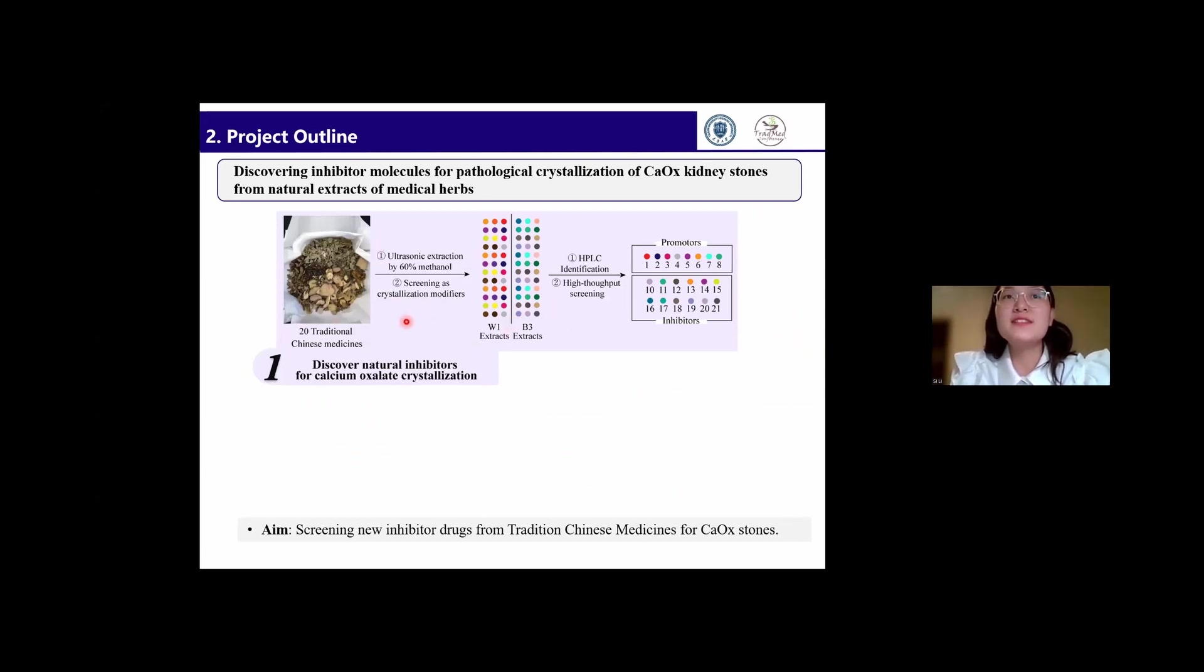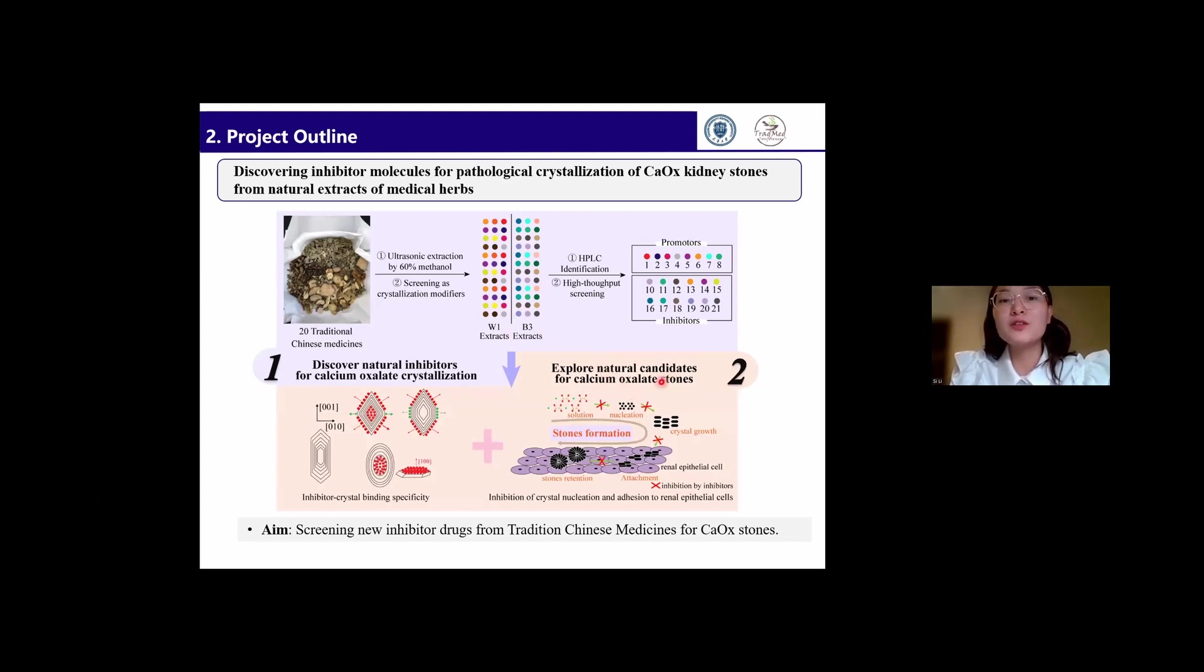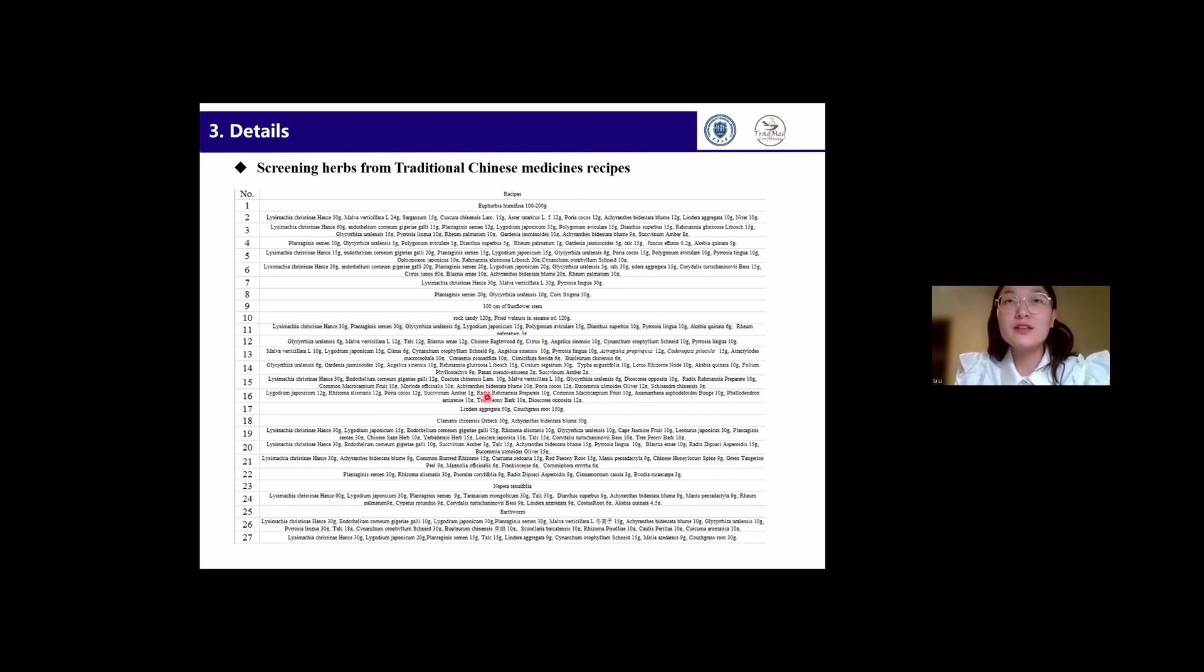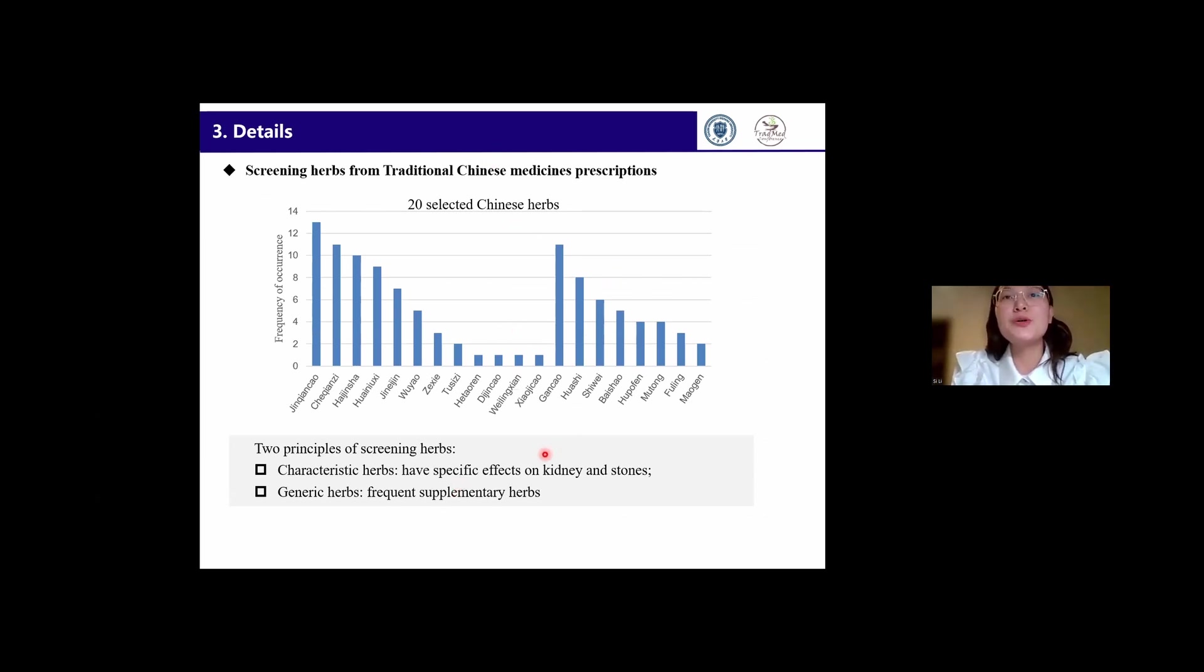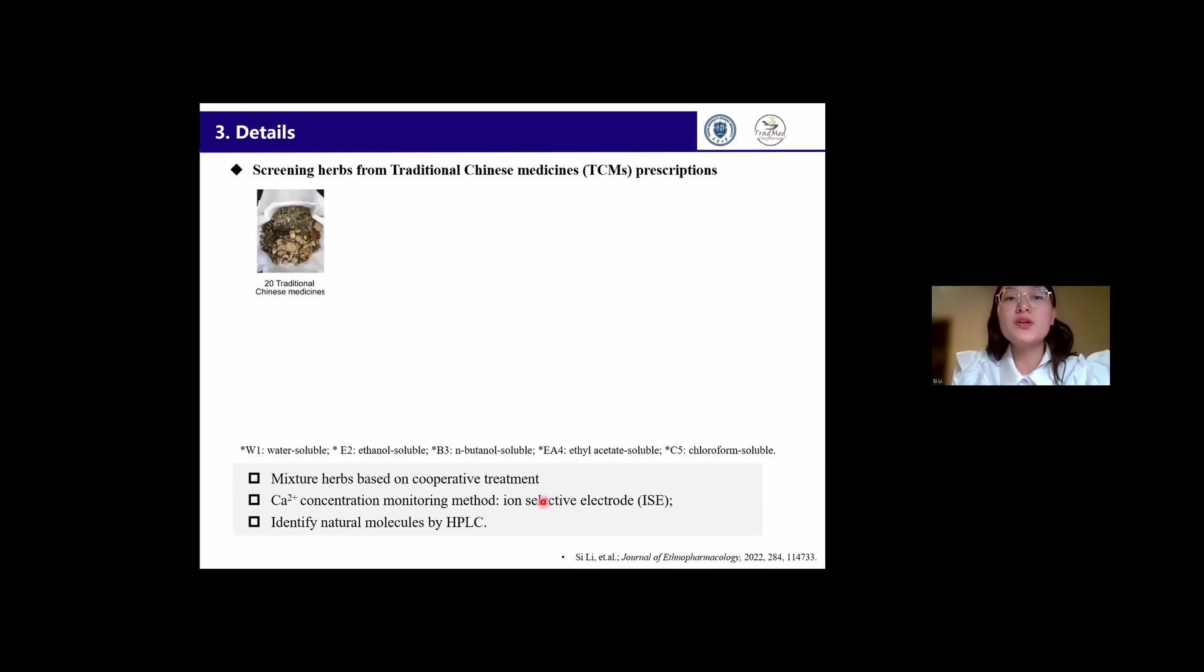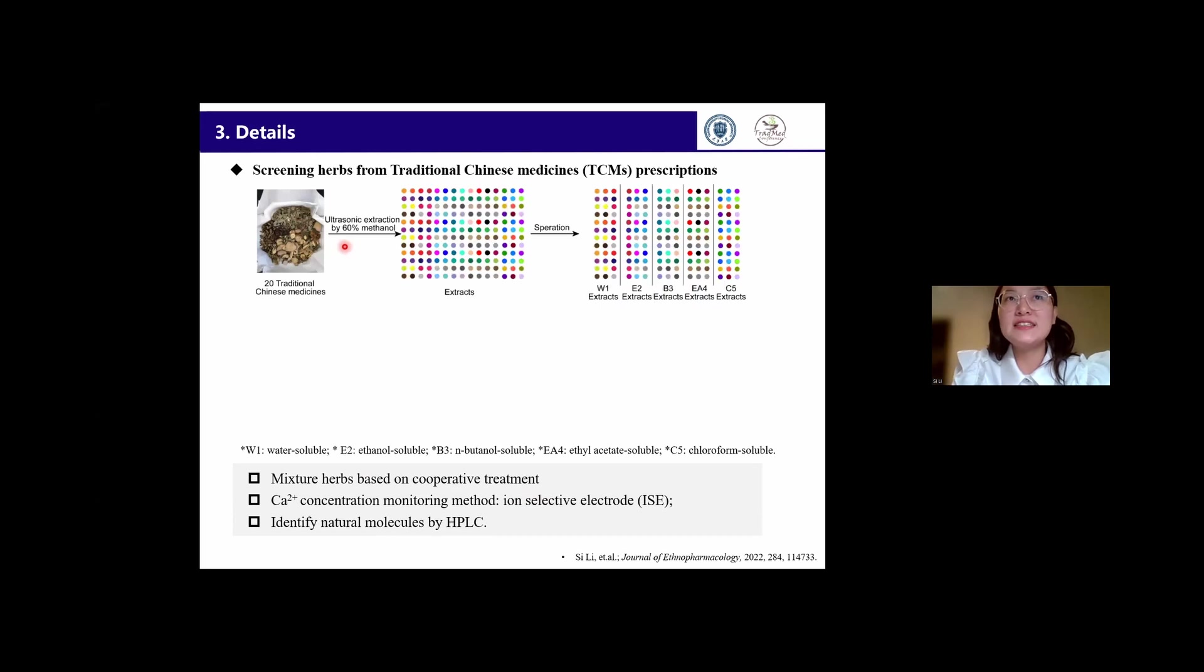Therefore, my study firstly discovered natural inhibitors from Chinese herbs, and then we further explored their inhibition performance for calcium oxalate stone formation. First of all, we found 720 common recipes of Chinese medicines for the treatment of kidney stones, and selected 20 herbs, where some have special effects on kidneys or stones, and some are frequently used as supplementary herbs. In order to increase the successful chance of screening, we established herb mixtures based on the principle of cooperative treatment of Chinese medicine. Then we extracted their main compositions from these herbs by ultrasonic extraction, and given the complex composition of these extracts, we divided them into fractions with different polarities.